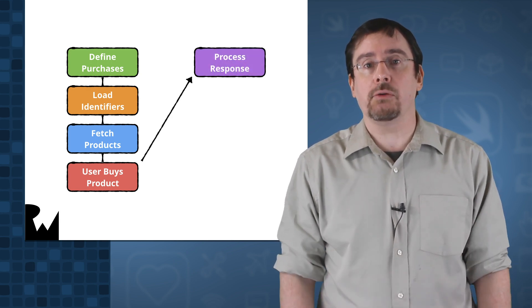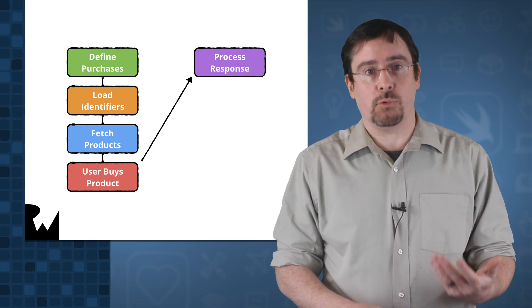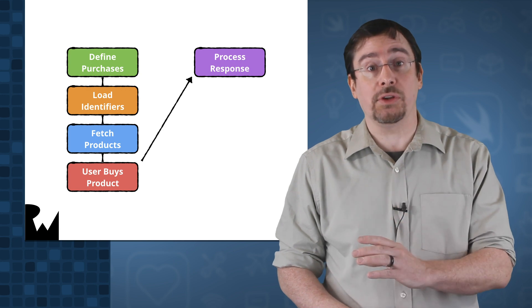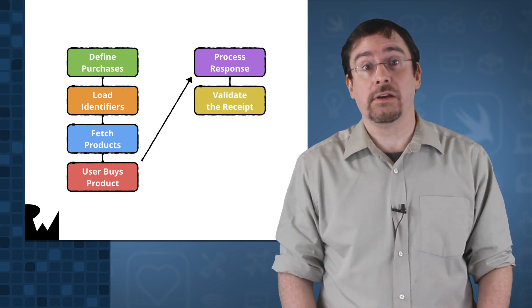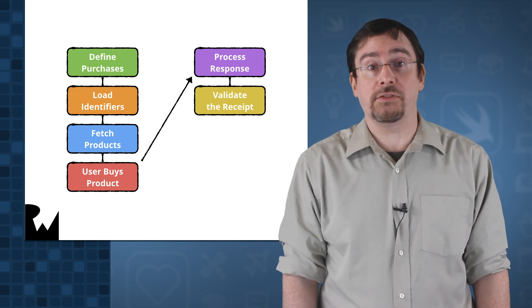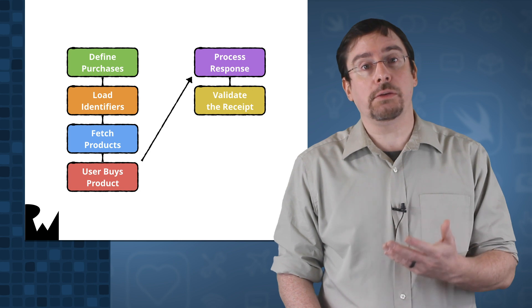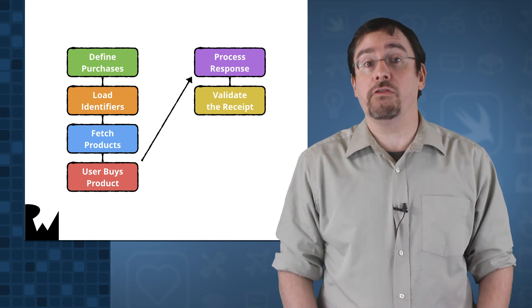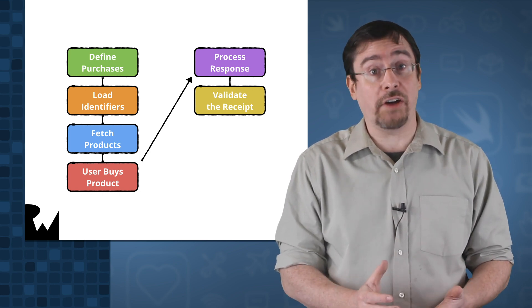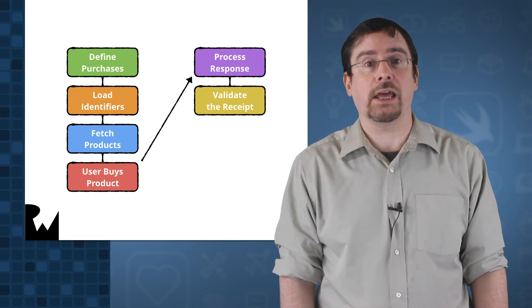Now, this is the part where things get a little bit dicey. You'll get a receipt, and reading app receipts involves decrypting the receipt and validating the contents. Now, how you do this is really up to you. This is the vague part of the process. Apple doesn't provide a single solution, so you'll need to provide your own. Now, you can either validate receipts on the device, or you can actually send out the receipt to another server to handle the validation.